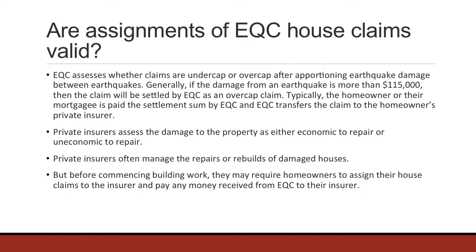Private insurers are often managing the repairs or rebuilds of earthquake-damaged houses. But before commencing building work, insurers often require homeowners to assign their house claims from EQC to the insurer and pay any money that EQC have paid. There's a really important principle of insurance law called the principle of indemnity, which says that no insured may recover more than the replacement value of the property insured. So if homeowners retain their EQC payments and have their private insurer do all the repairs or rebuilds, they would receive more than their full entitlements, which would be unfair to the insurers. That's a powerful reason why homeowners should assign their house claims to private insurers.